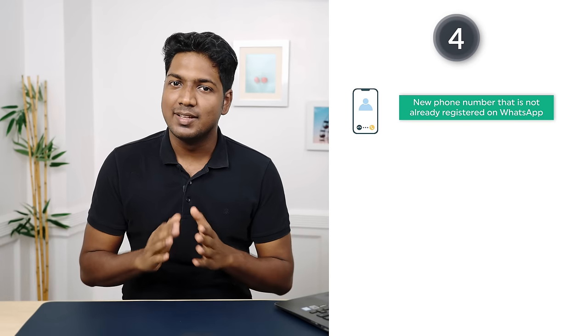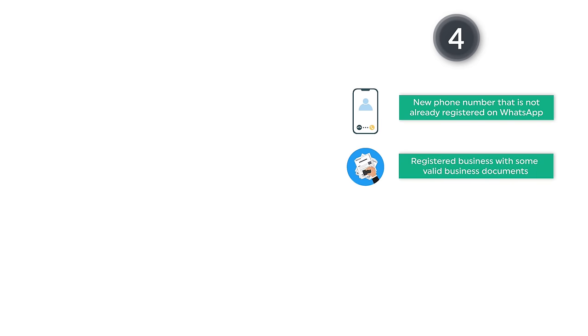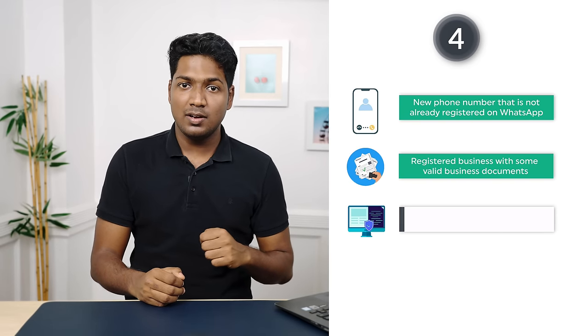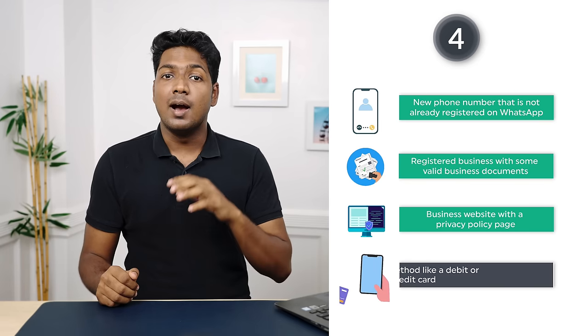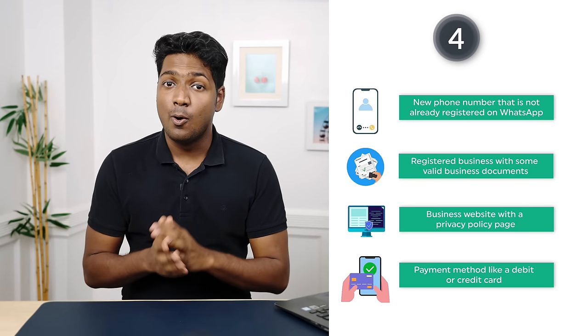So now let's see how we can set up this tool and start sending bulk messages. We will see this process step by step. I'm Brian from Website Learners and let's see how you can send bulk messages using WhatsApp Cloud API. Now before we start, make sure you have these four things: a new phone number not already registered on WhatsApp, a registered business with valid business documents, a business website with a privacy policy page, and a payment method like a debit or credit card.